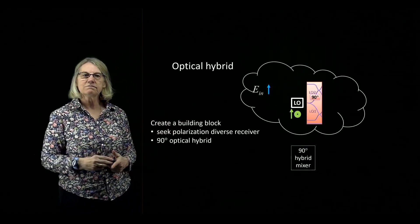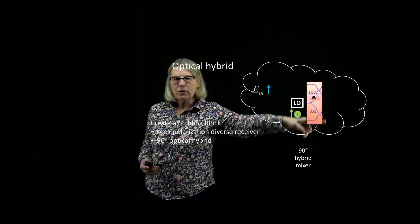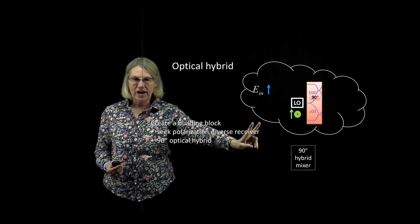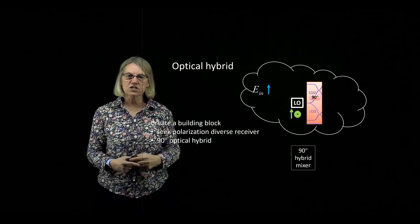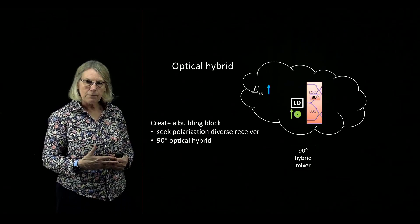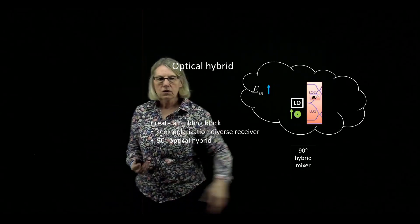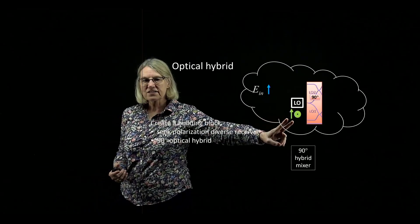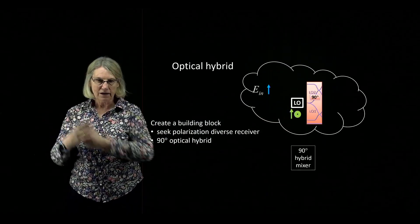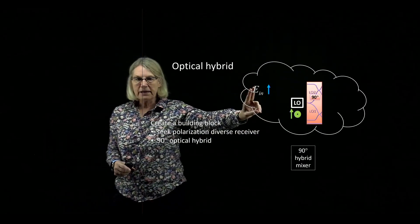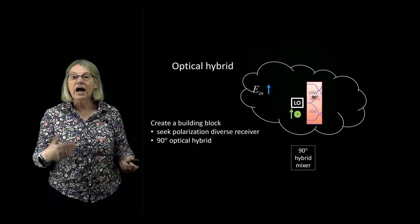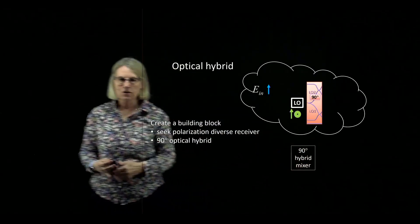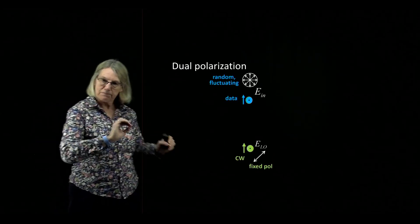Assuming the local oscillator behaves this way — with one polarization on the input signal and two on the local oscillator — and doing the beating and mixing following the 2x2 coupler, I'm going to combine this into one device: a 90-degree hybrid mixer. This hybrid mixer takes the two polarization states of the local oscillator and applies them to the incoming polarization state, whatever it might be. This becomes the black box I'll use to create the polarization diverse solution.